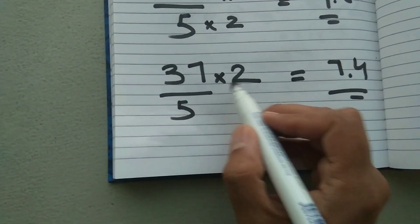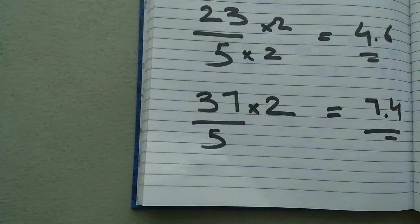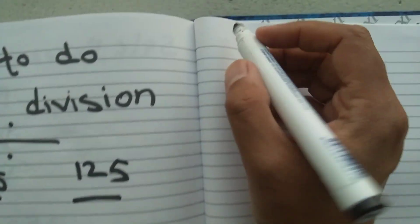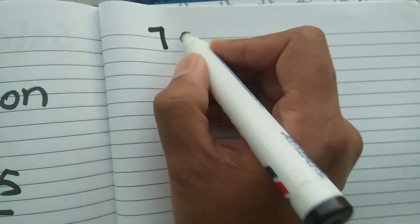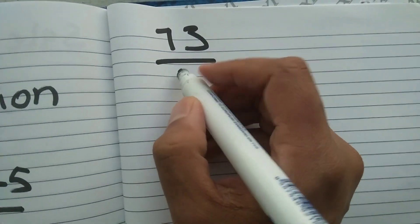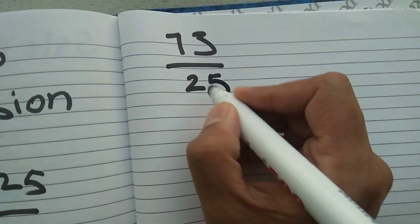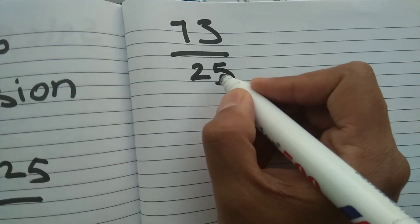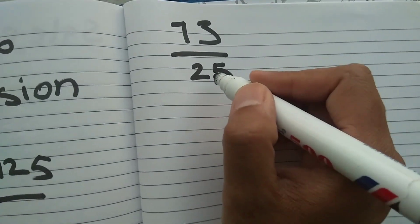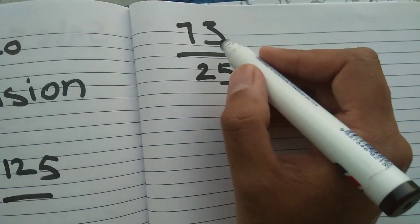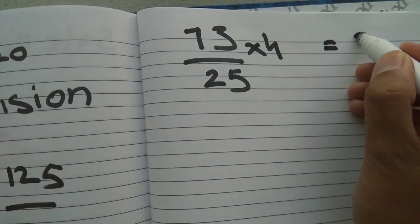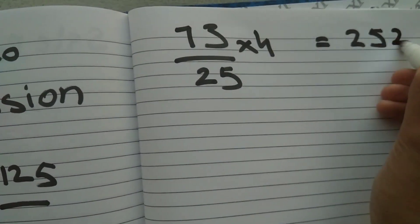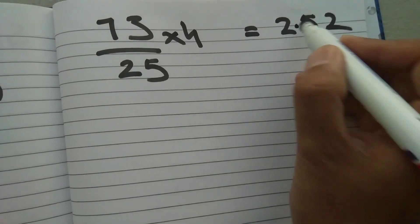Now let's move to dividing by 25. For example, 73 divided by 25. For 25, if you want to divide any value by 25, you have to multiply the top value by 4. So 73 multiplied by 4 gives 292, then place the decimal point here — that's the answer.